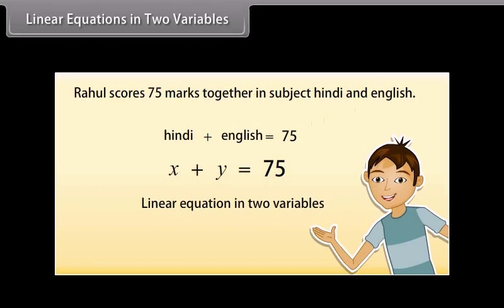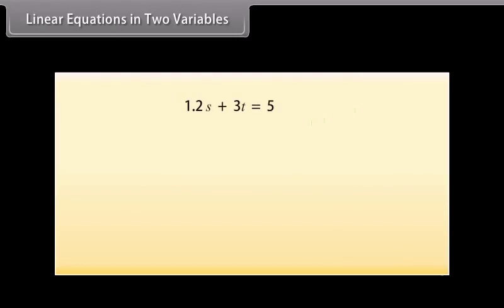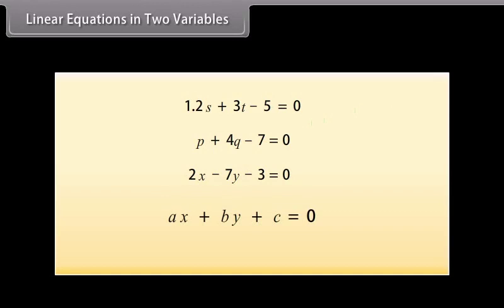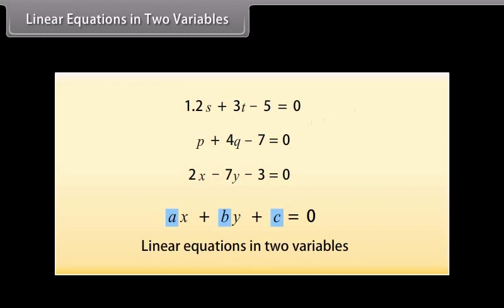Other examples of linear equations in two variables are: 1.2S plus 3T equals 5, P plus 4Q equals 7, and 3 equals 2X minus 7Y. We can put these in the form: 1.2S plus 3T minus 5 equals 0, P plus 4Q minus 7 equals 0, and 2X minus 7Y minus 3 equals 0. So any equation which can be put in the form AX plus BY plus C equals 0, where A, B, and C are real numbers and A and B are not both zero, is called a linear equation in two variables.